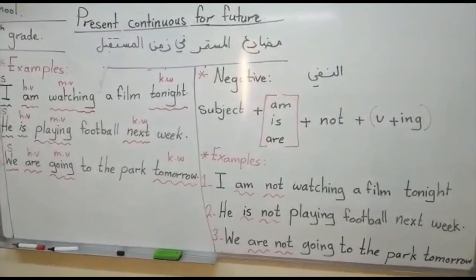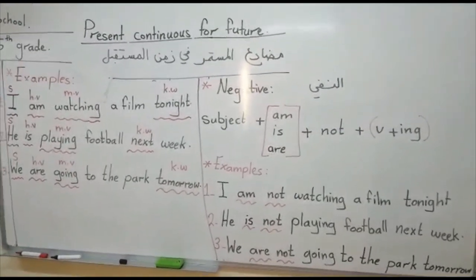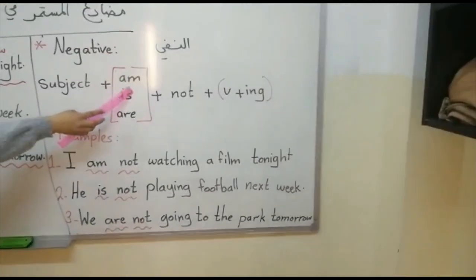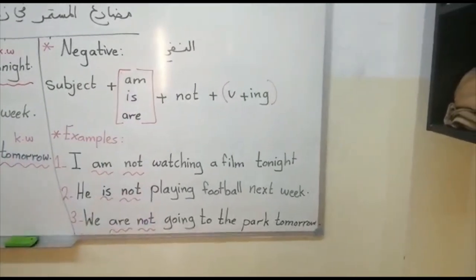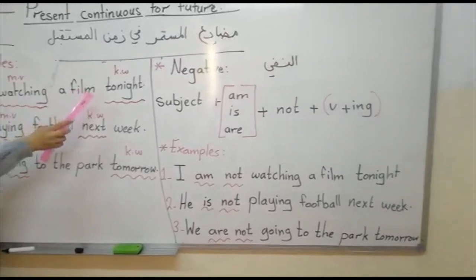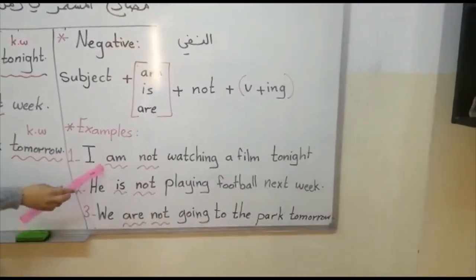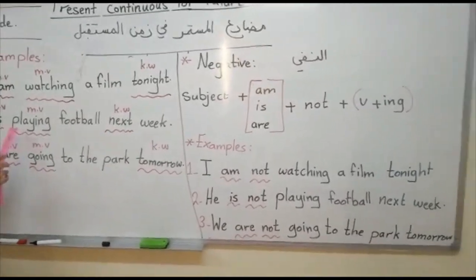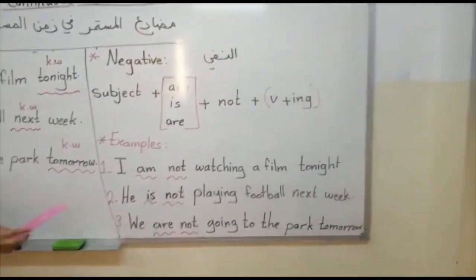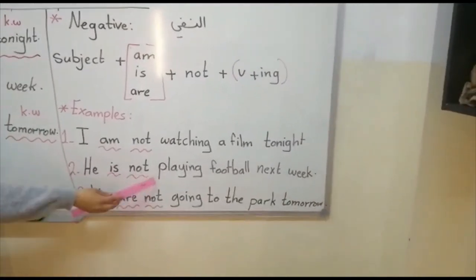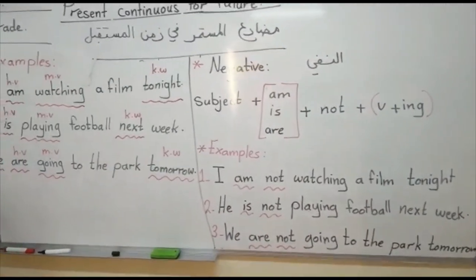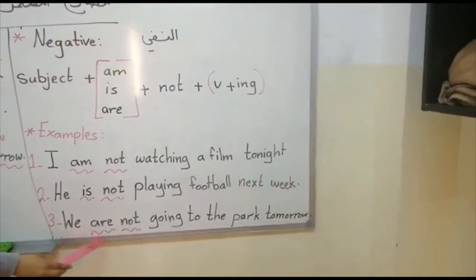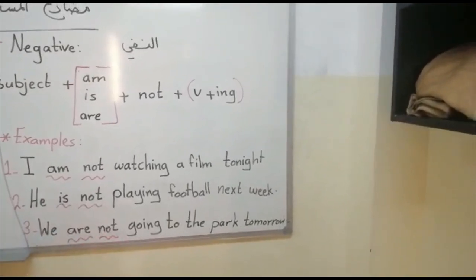Now we will talk about how to negate a sentence using Present Continuous. We only add 'not' after the helping verb am, is, or are. For example: 'I am watching a film tonight' becomes 'I am not watching a film tonight.' 'He is playing football next week' becomes 'He is not playing football next week.' 'We are going to the park tomorrow' becomes 'We aren't or are not going to the park tomorrow.'